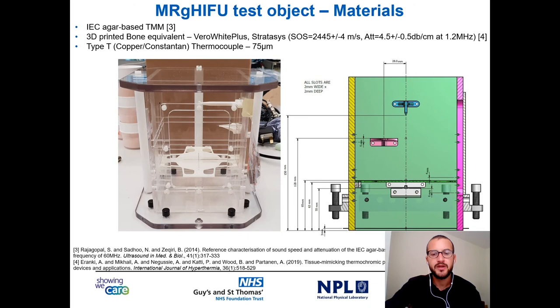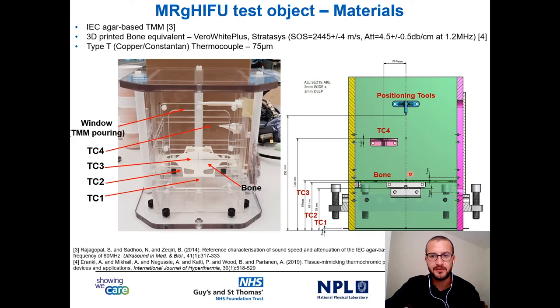When you want to build the phantom, the first problem you have is the choice of materials. Materials must be compatible with the technology of interest, which in this case are ultrasound and magnetic resonance imaging. We use the well-known IC recipe, which is an agar-based tissue-mimicking material with speed of sound 1540 m/s and attenuation 0.5 dB per centimeter. We use a 3D-printed bone equivalent disc to mimic flat bone, and type T copper-constantan thermocouples of size 75 micron, to be MRI compatible and to minimize interaction with ultrasound fields. Thermocouples were placed in the region below and above the bone, and one thermocouple was used as reference. Positioning tools and engravings were manufactured to support thermocouple identification in 3D space in MRI.